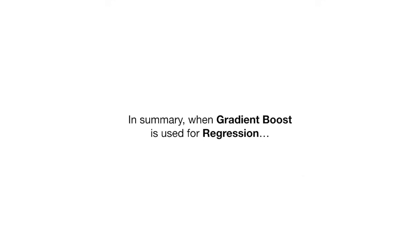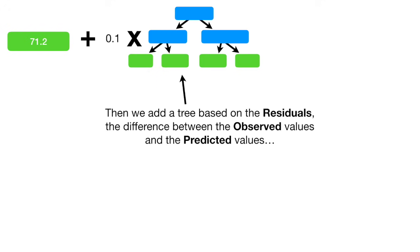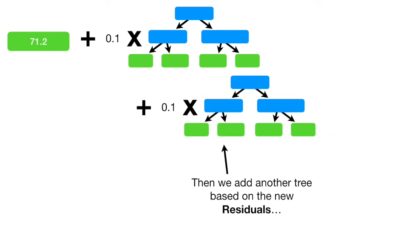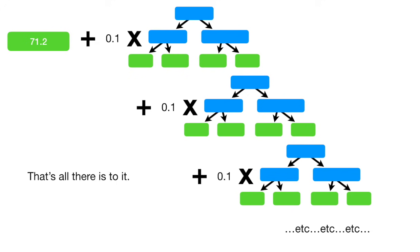In summary, when Gradient Boost is used for regression, we start with a leaf that is the average value of the variable we want to predict. Then we add a tree based on the residuals — the difference between the observed values and the predicted values — and we scale the tree's contribution to the final prediction with a learning rate. Then we add another tree based on the new residuals, and we keep adding trees based on the errors made by the previous tree. That's all there is to it.